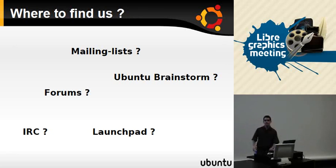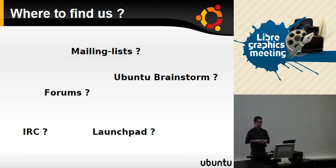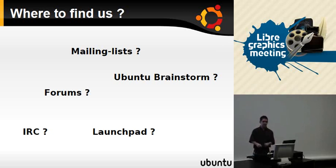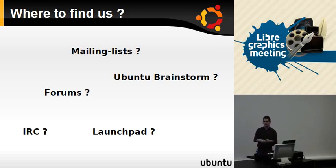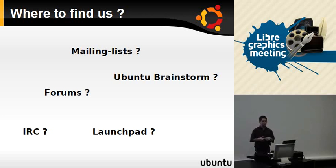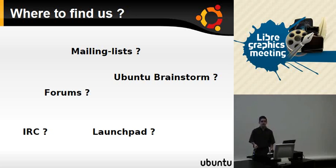Now, where can you find an Ubuntu developer? There are quite a lot of resources. For developers, the easiest way to contact them for bug reports is Launchpad. IRC also works quite well, but don't try to ask support questions in the development channels — they don't like that at all. We also have mailing lists for development. Ubuntu Brainstorm, which I'll speak about later, is a way to get new ideas for your software — basically what users would like to have. The forums are also mainly used by some people who look at them, get bug reports from there, and report them in Launchpad because developers just don't go on the forums at all.